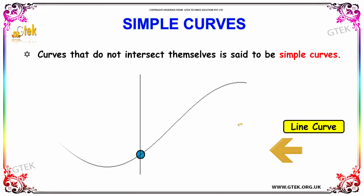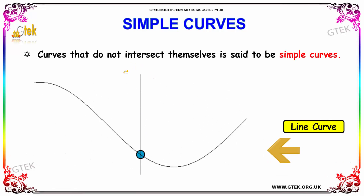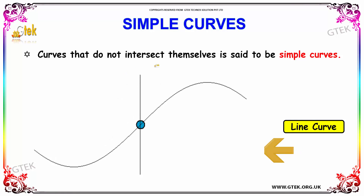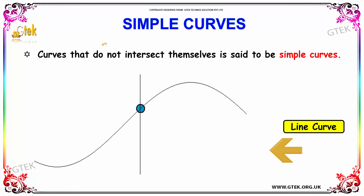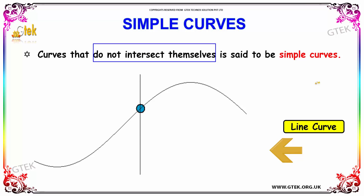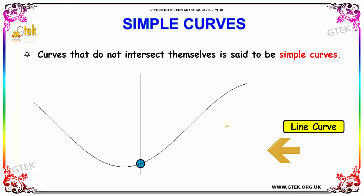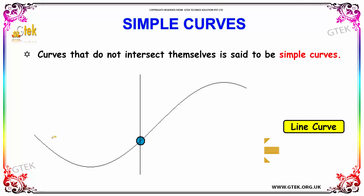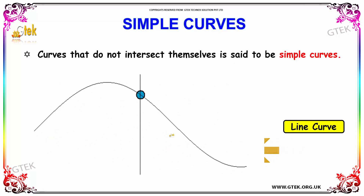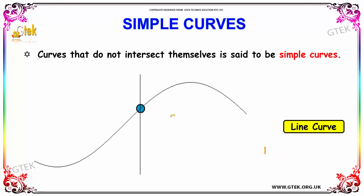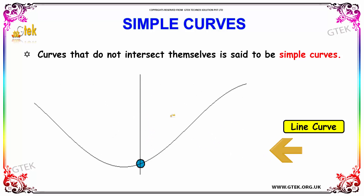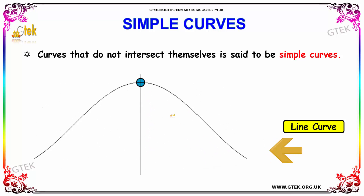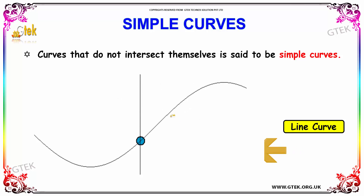What is a simple curve? Curves which do not intersect themselves are said to be simple curves. Here you can see a curved line which does not intersect itself, and hence it is a simple curve.